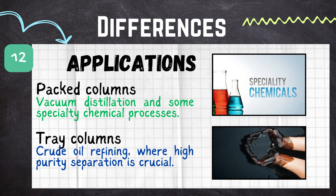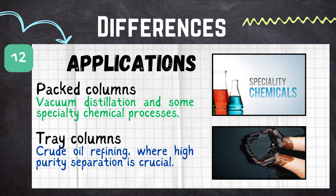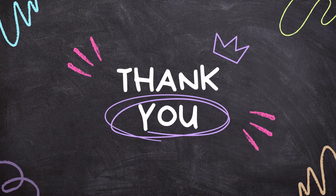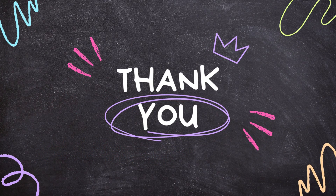In conclusion, the choice between packed and tray column distillation depends on factors such as desired separation efficiency, the nature of the mixture, and the specific requirements of the process. Packed columns are often chosen for simplicity and low pressure drop, while tray columns are preferred for high purity separation in large-scale industrial applications. The decision ultimately depends on the specific needs and characteristics of the process.